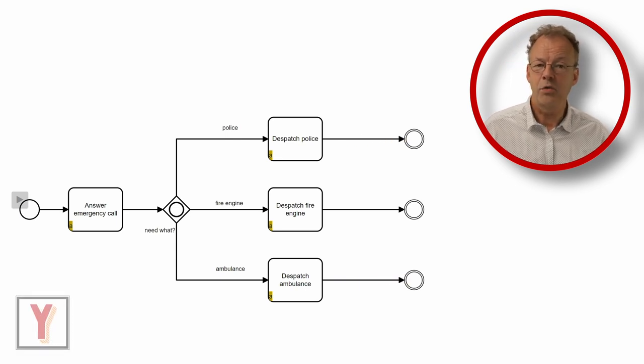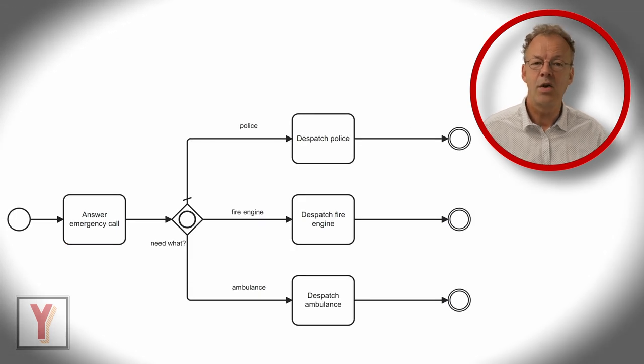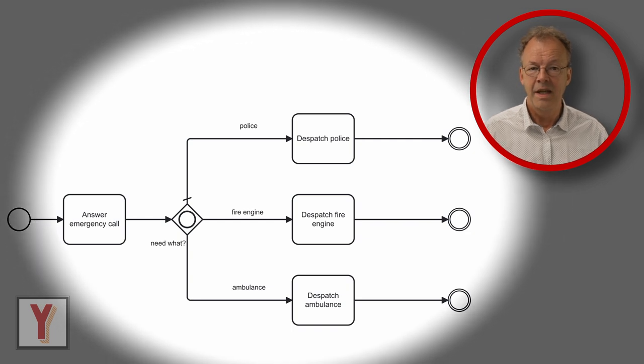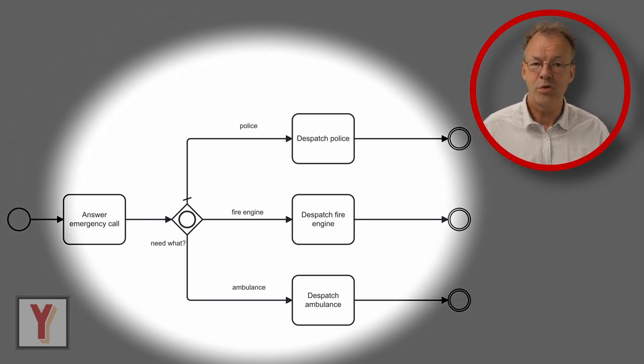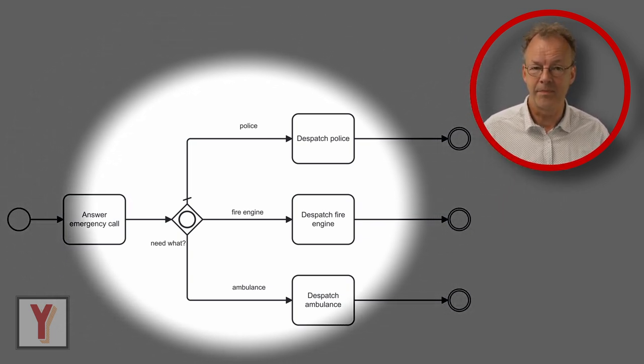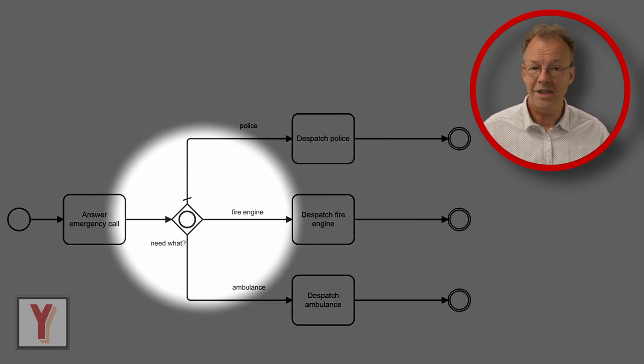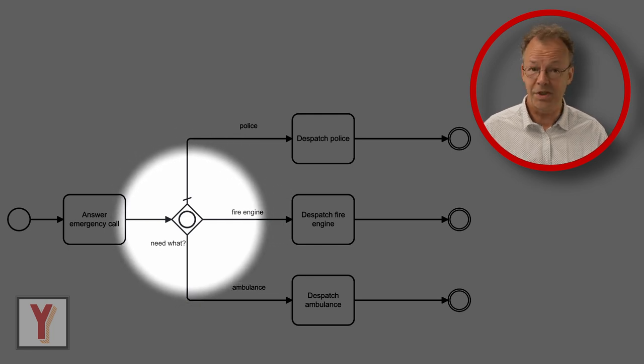There is in fact an issue with this gateway. It is ensuring that at least one of the branches is selected. BPMN has an approach to partly solve this problem. It is called a default flow and denoted by a small dash on the arc as can be seen here. This is the default branch to be chosen if all other conditions evaluate to false. In this case, it is the police.